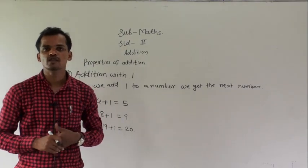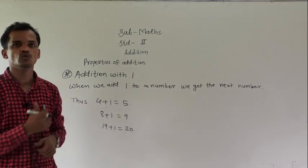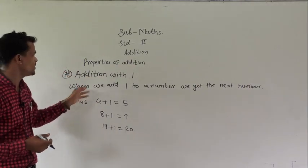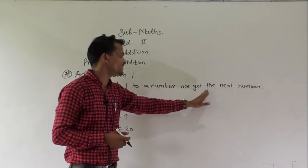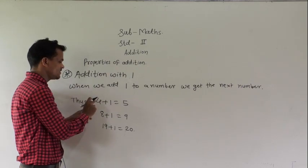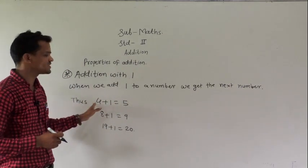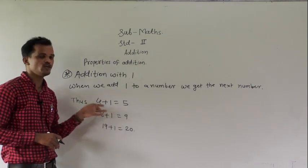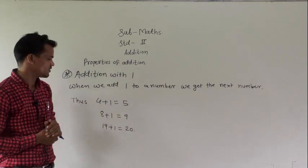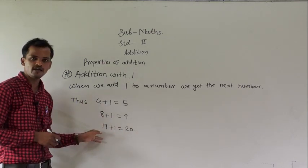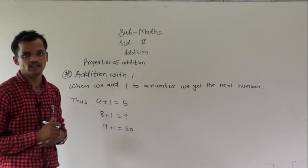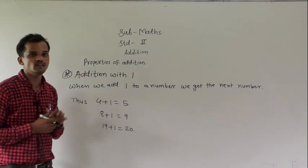The next property is addition with 1. If we add 1 to any number, then we will get the next number. When we add 1 to a number, we get the next number. For example, if we add 1 to 4, we get 5, and 5 is the next number of 4. If we add 1 to 19, we get 20, and 20 is the next number of 19. So this is the property of addition with 1.